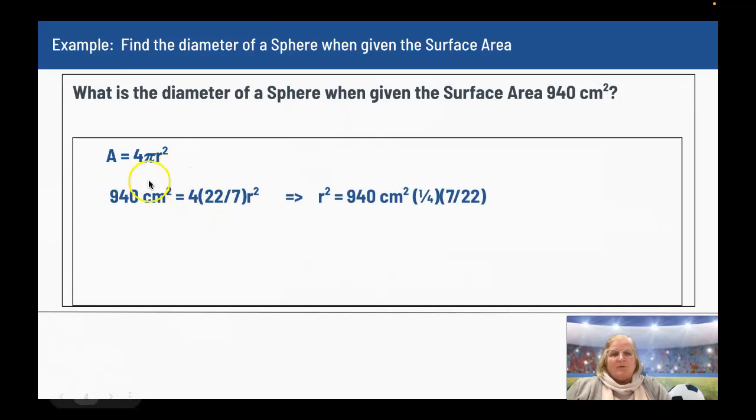When I plug in what I know, I have 940 centimeters squared equals 4 times pi, 22 over 7, times r squared. I'm looking for the diameter. But first, I'm going to solve for r squared. You can replace the r with d divided by 2 because you know that the diameter is equal to 2r.